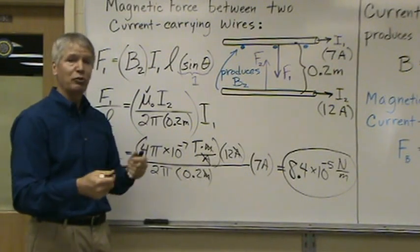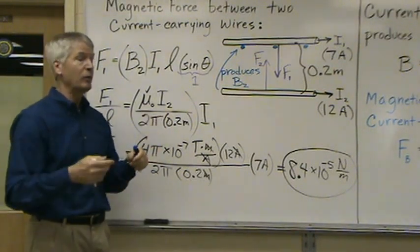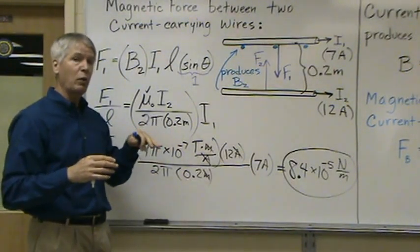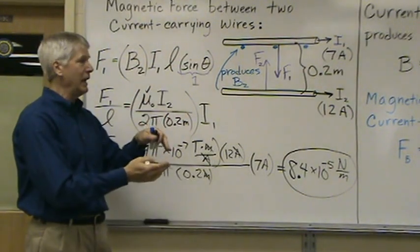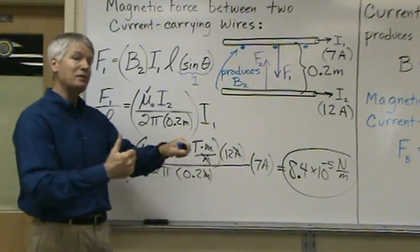So equal magnitude of forces, opposite direction, they attract each other. So when two current carrying wires have the current in the same direction, they attract. And actually if the currents were in the opposite directions, they'd repel each other.